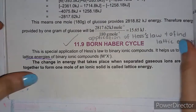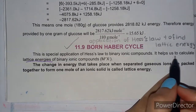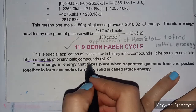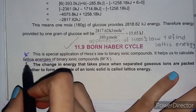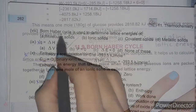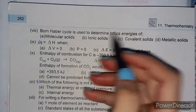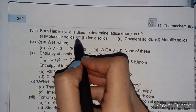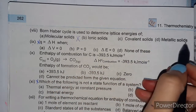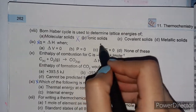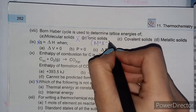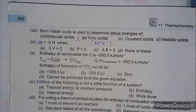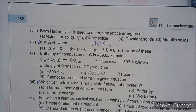I want to tell you one MCQ: the application of Hess's Law helps us to calculate the lattice energy of binary ionic compounds. This is the MCQ — they must give you some options. The correct answer is lattice energy. The Born Haber Cycle is used to determine the lattice energy of ionic solids — M⁺X⁻ — not molecular, covalent, or metallic solids. The correct answer is (b) ionic solids.